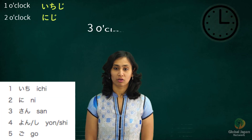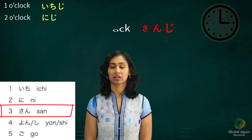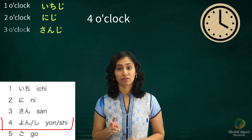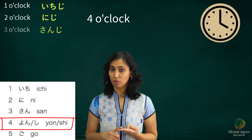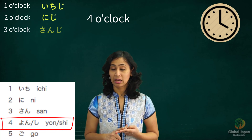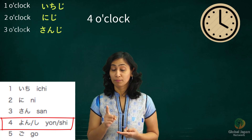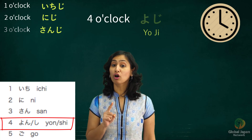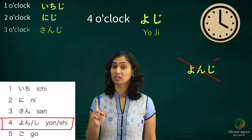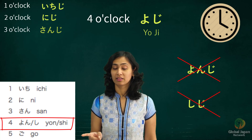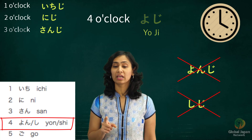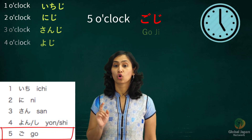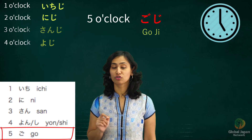Three o'clock: San Ji. Four o'clock — well, four has two ways of calling, Yon or Shi, but four o'clock would be Yoji. Not Yonji or Shiji either — the word is Yoji. Five o'clock: Goji.